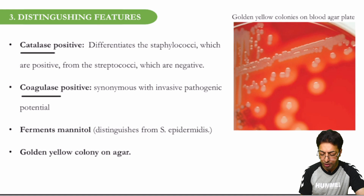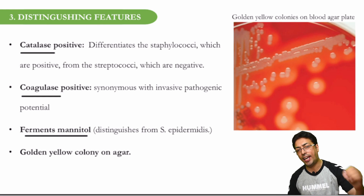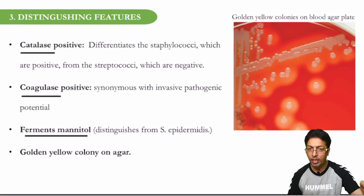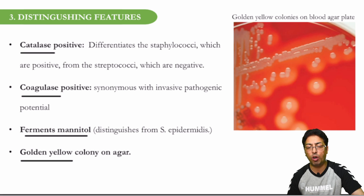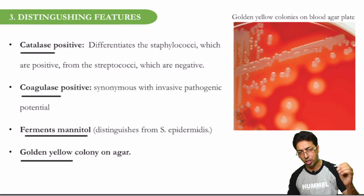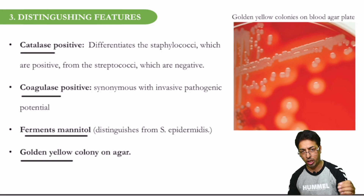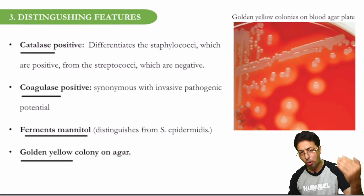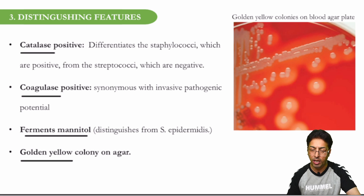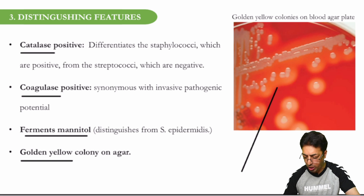In addition, Staph aureus ferments mannitol. One important and characteristic feature on agar is that they form golden yellow colonies — very important to remember, because sometimes you are asked about media and what type of colonies they produce. So by now: Staph aureus is gram positive, non-motile, non-sporing, ferments mannitol, catalase positive, coagulase positive, and produces characteristic golden yellow colonies. Repetition is important because it facilitates memory. This is an image-based question — golden yellow colonies seen on blood agar plate.